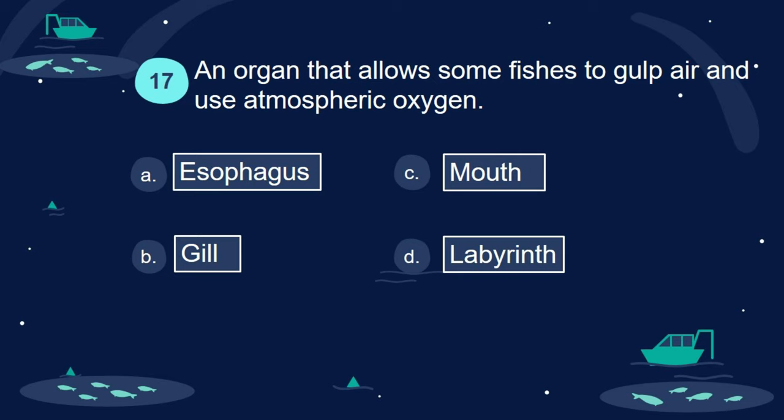Question 17. An organ that allows some fishes to gulp air and use atmospheric oxygen: A. Esophagus. B. Gill. C. Mouth. D. Labyrinth.